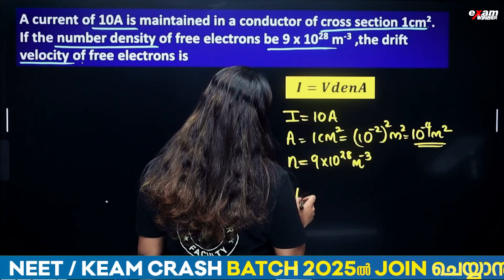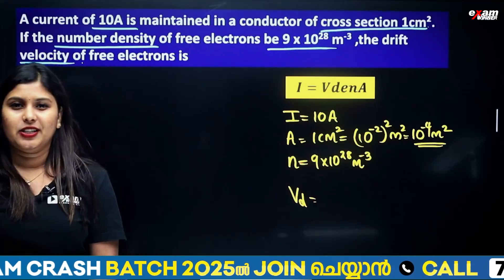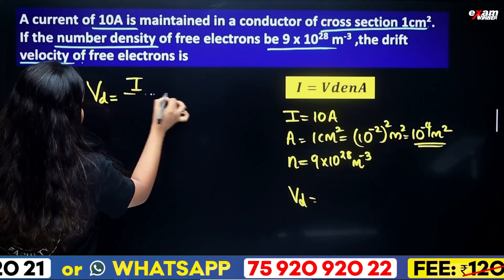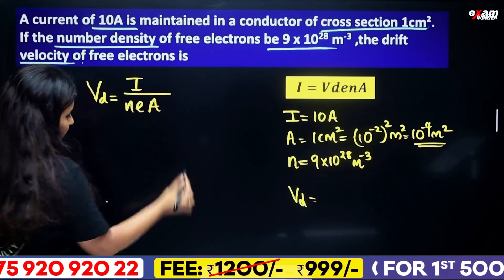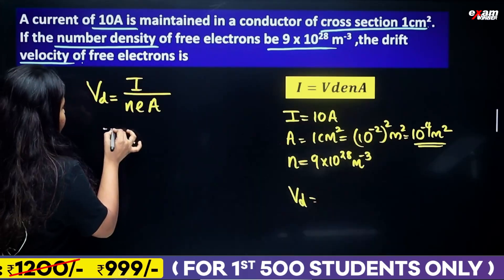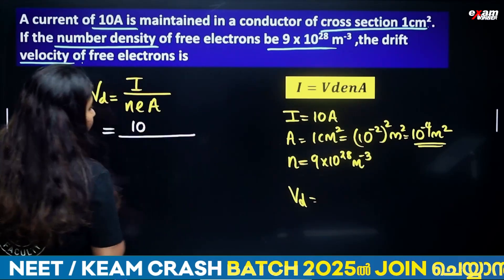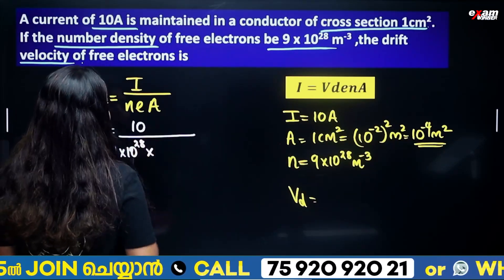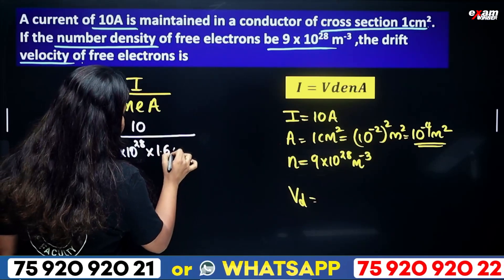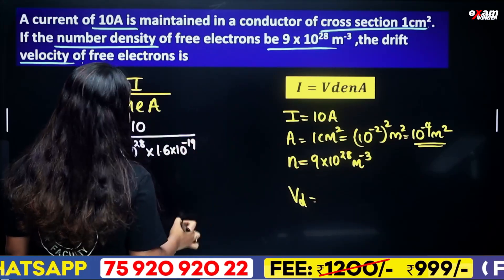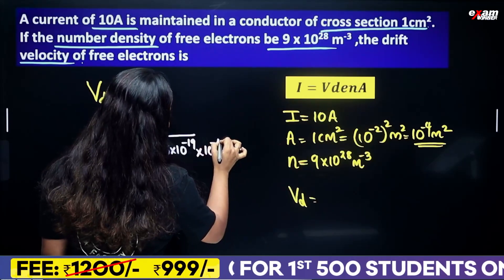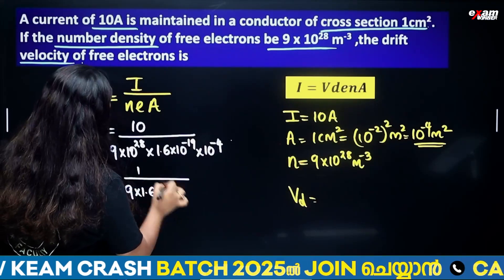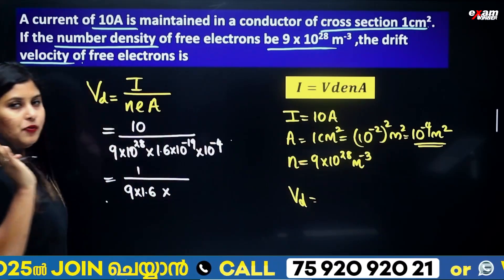Drift velocity formula: Vd = I/(nAe). Current I = 10 A, number density n = 9×10²⁸, charge e = 1.6×10⁻¹⁹, area A = 10⁻⁴ m². So Vd = 10 / (9×10²⁸ × 1.6×10⁻¹⁹ × 10⁻⁴).